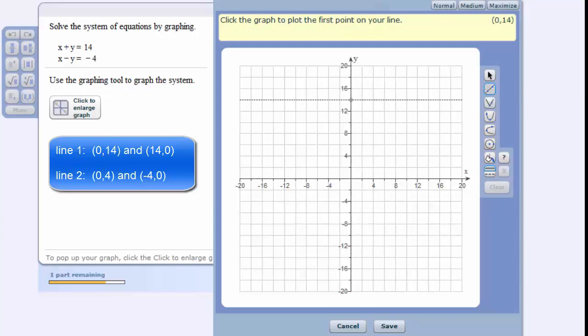And I'm going to click on the two points for the top line. I'll start with (0,14) and click on it. And then go to (14,0) and click on it.